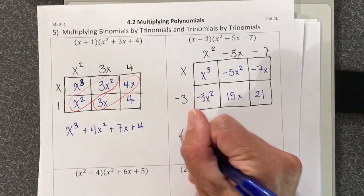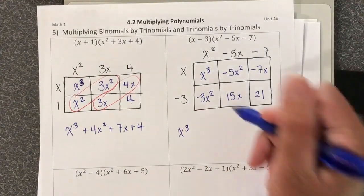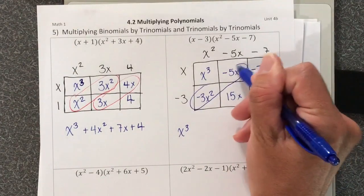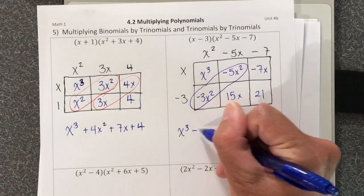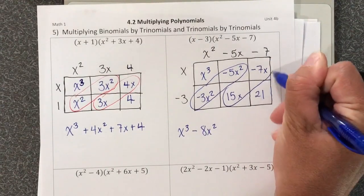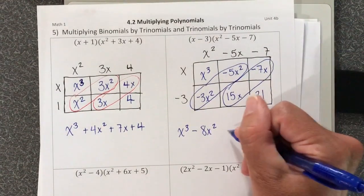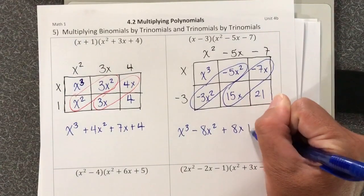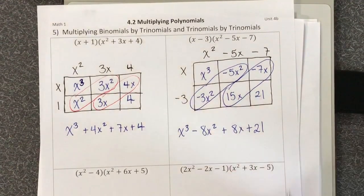So my first term is the x cubed. Then I'm going to combine my x squares and they combine to make negative 8x squared. Combine the 15x and the negative 7x to a plus 8x and then last is plus 21. All right, so let's go to the next one.